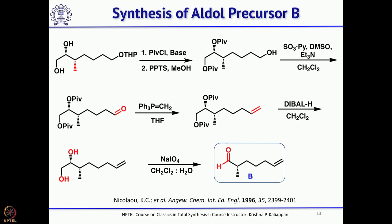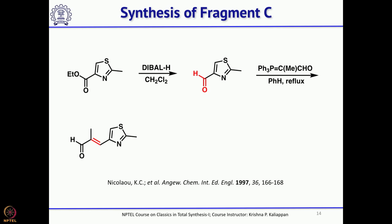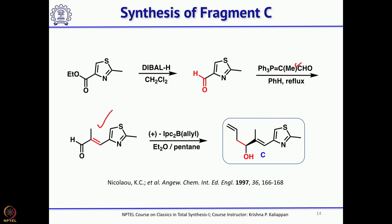Having Fragments A and B in place, for Fragment C he started with a thiazole ester. Reduction of the thiazole ester with DIBAL gave the aldehyde, and homologation with a Wittig reagent gave the alpha-beta unsaturated aldehyde. Then Brown allylation gave Fragment C.